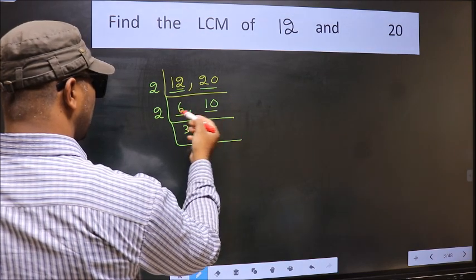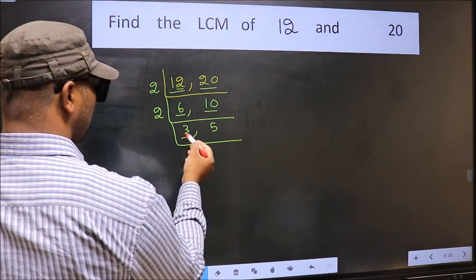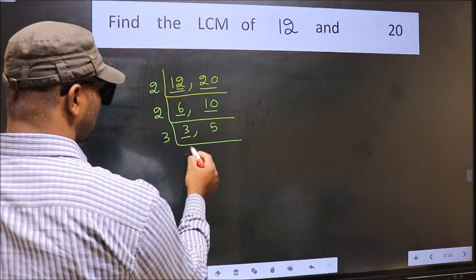The other number 10. When do we get 10 in 2 table? 2, 5 is 10. Now here we have 3. 3 is a prime number, so 3, 1 is 3.